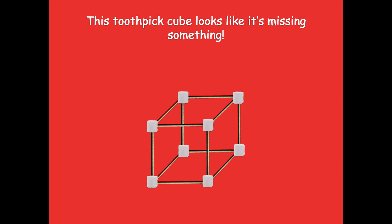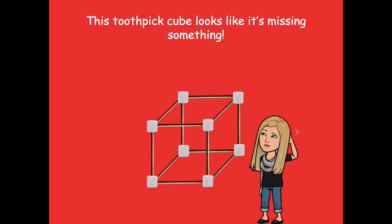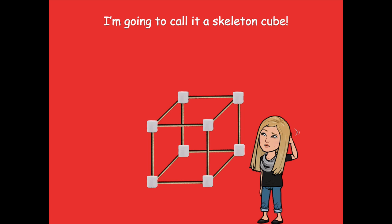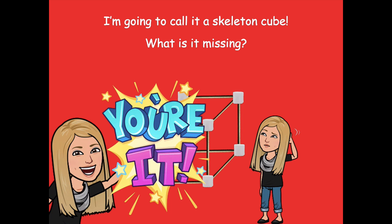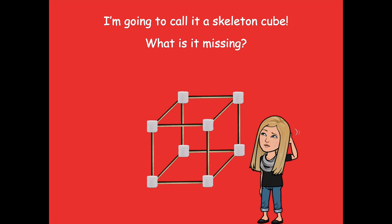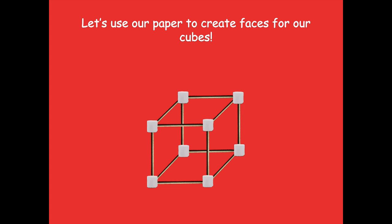This toothpick cube looks like it's missing something — I'm going to call it a skeleton cube. What do you think it's missing? Yeah, it's missing the sides or the faces. It's like you're seeing the bones of your cube right now. We want to cover up the bones with some skin, and we can use our paper to create faces for our cubes.